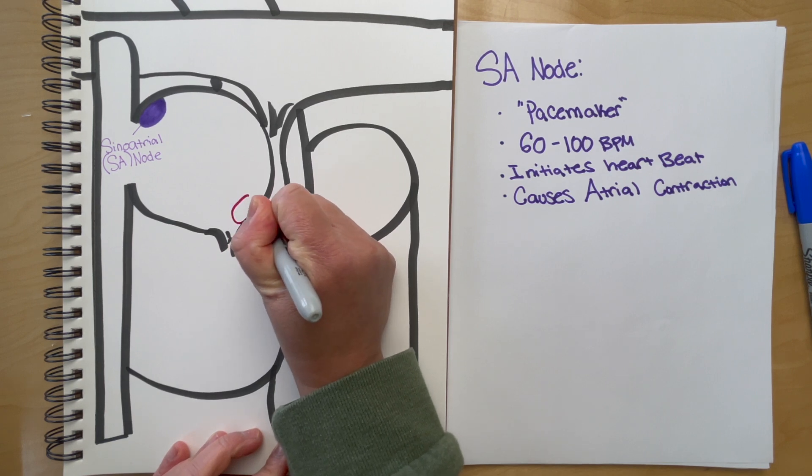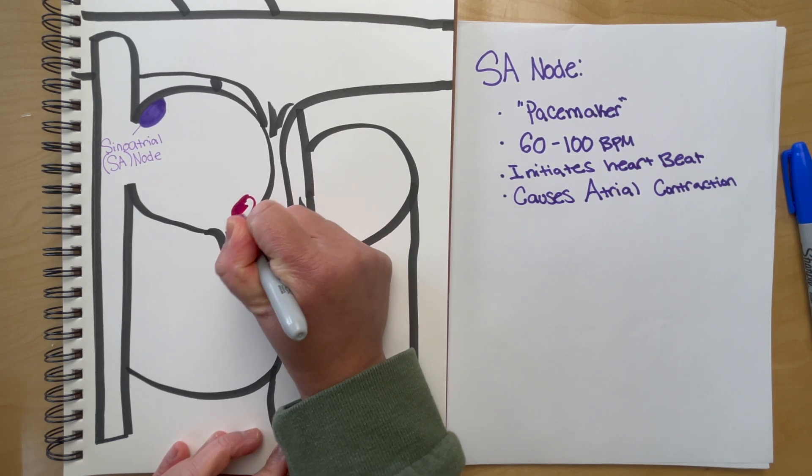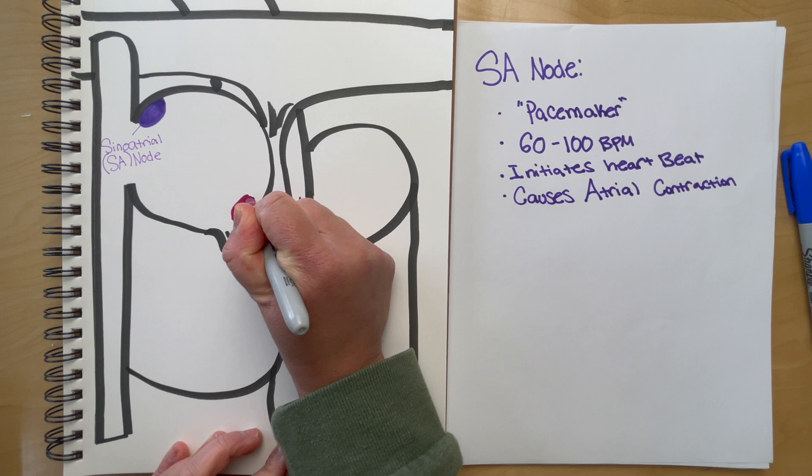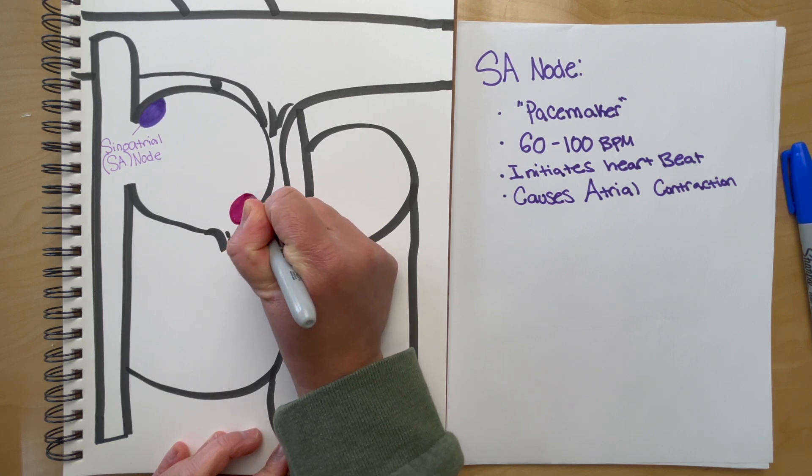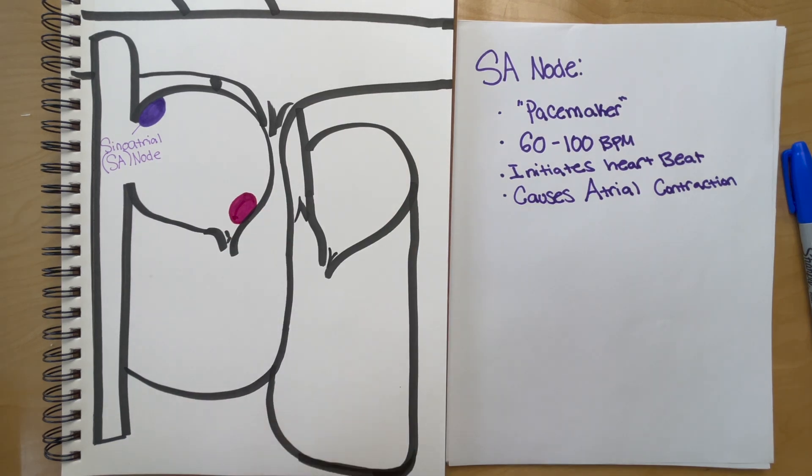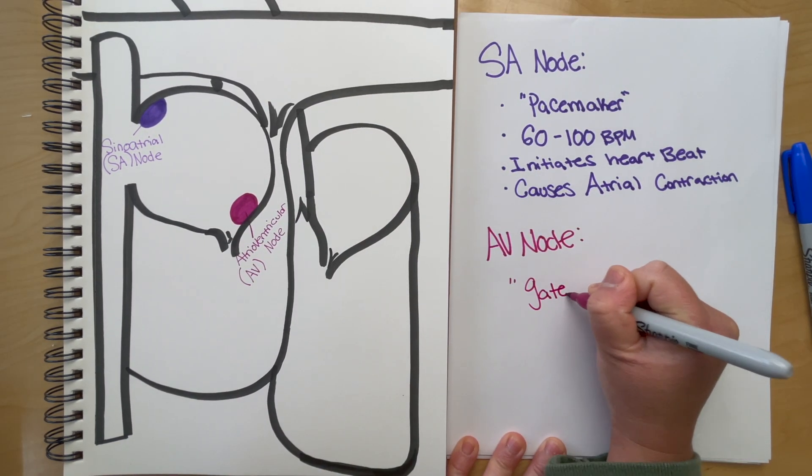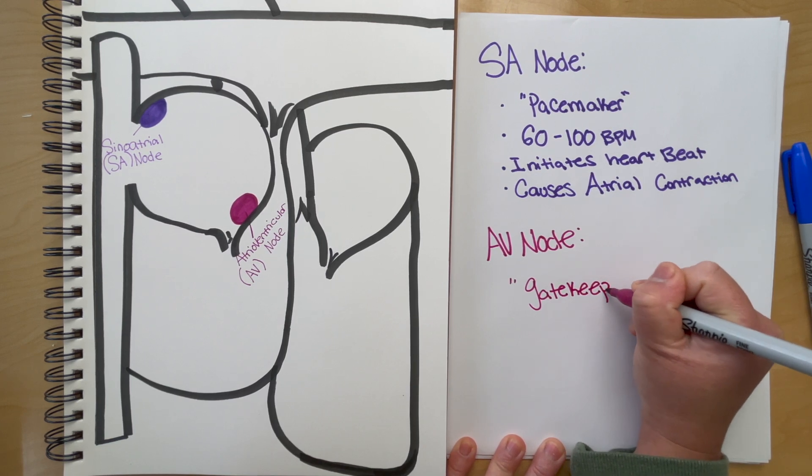Next we have the atrioventricular node, also known as the AV node for short. This is also in the right atrium, but on the bottom portion of the right atrium near the AV valve. The AV node generally causes ventricular contraction and is also known as the gatekeeper of the heart.